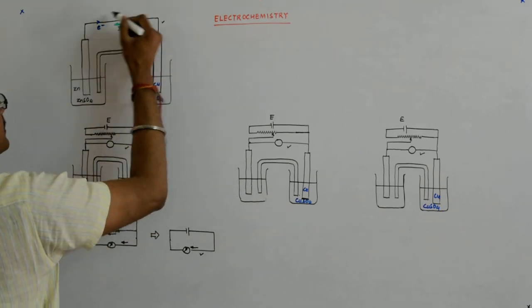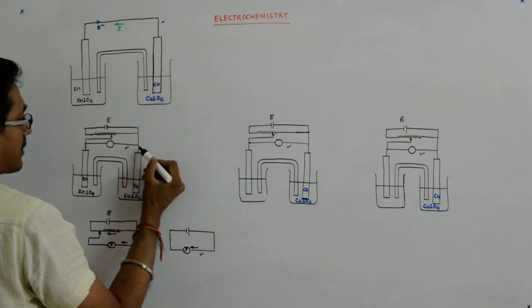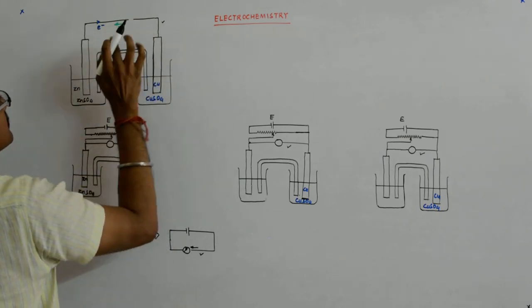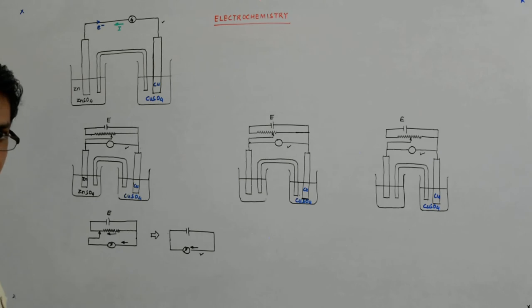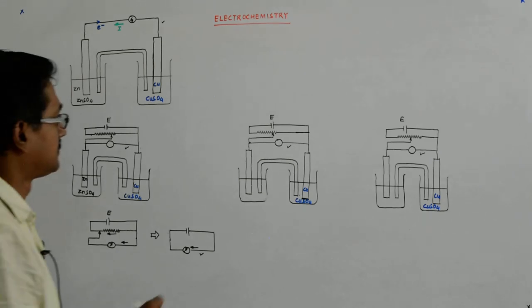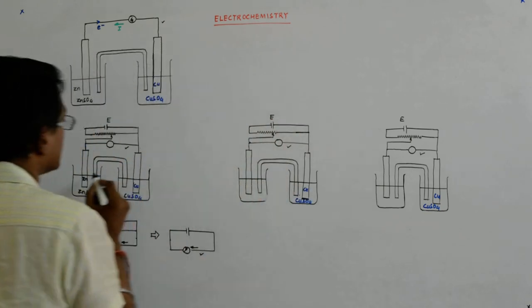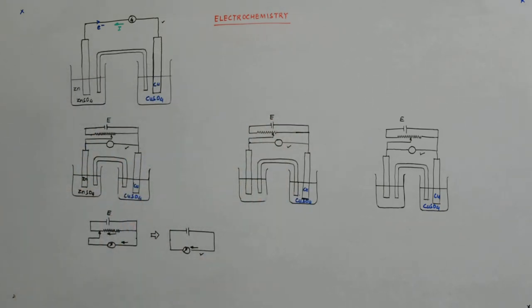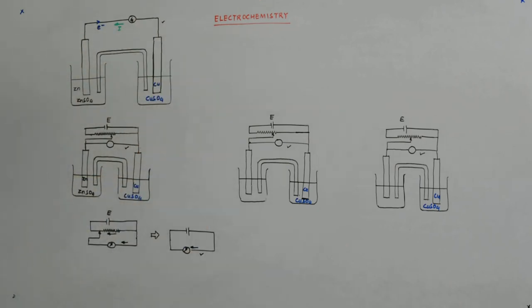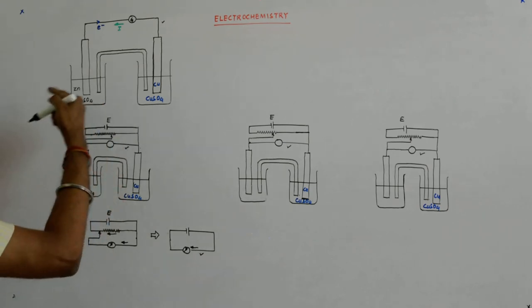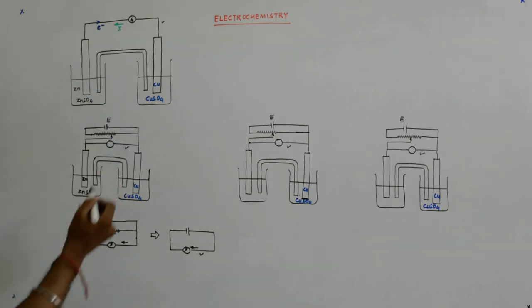The wire that is connected across the electrode is actually this wire. This is the wire with the galvanometer. And what is the direction of the current we have? The direction of the current is this.